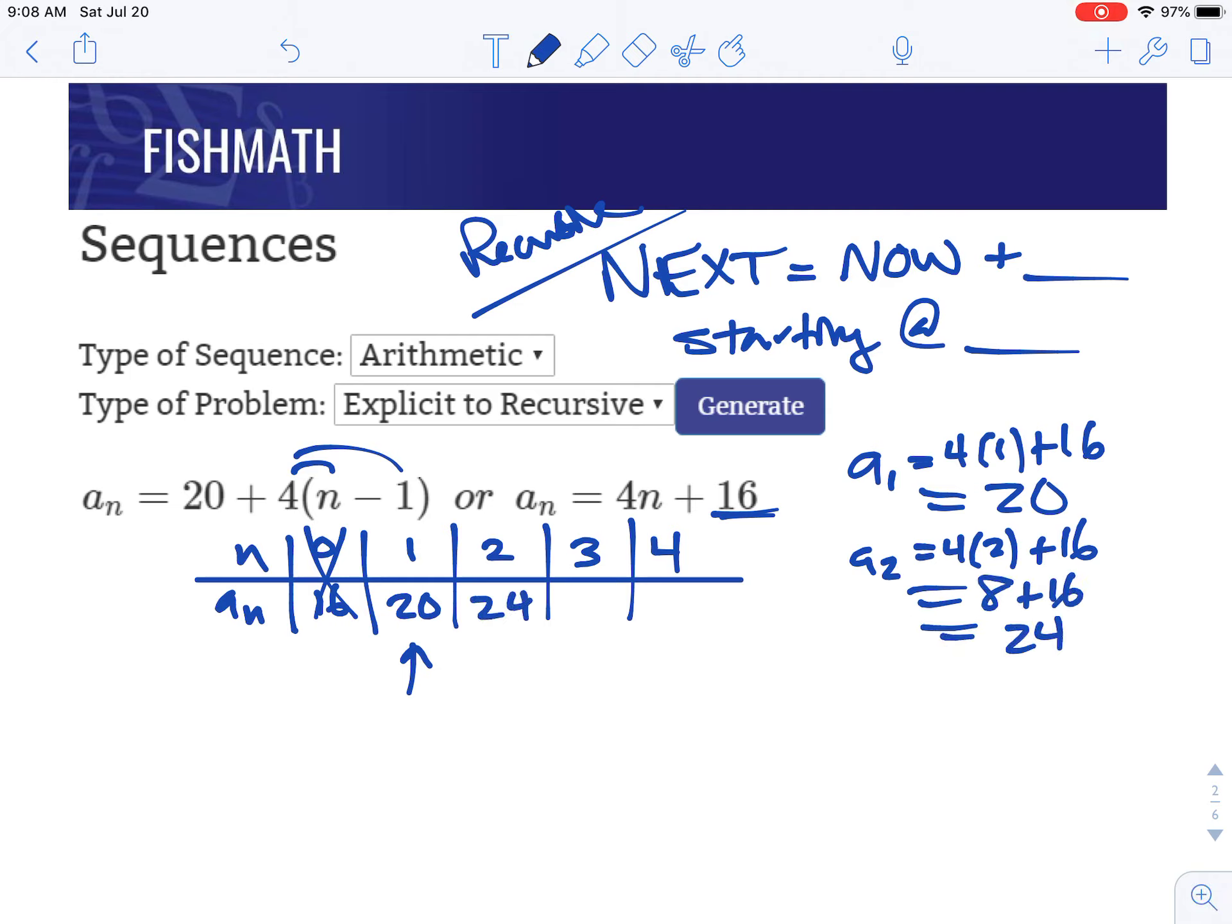And you can already see what the change is going to be, which should make sense. We know this is linear, so we're adding 4, which is the slope. Since n is increasing by 1, a of n is increased by 4, because that's our slope. So we know this would be 28 and 32.